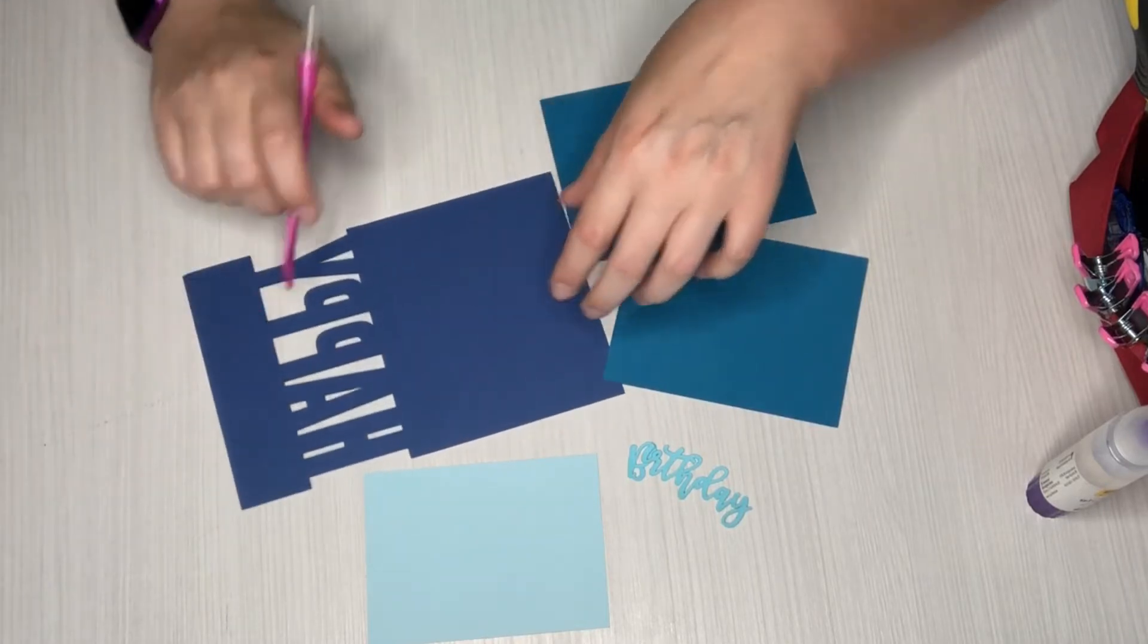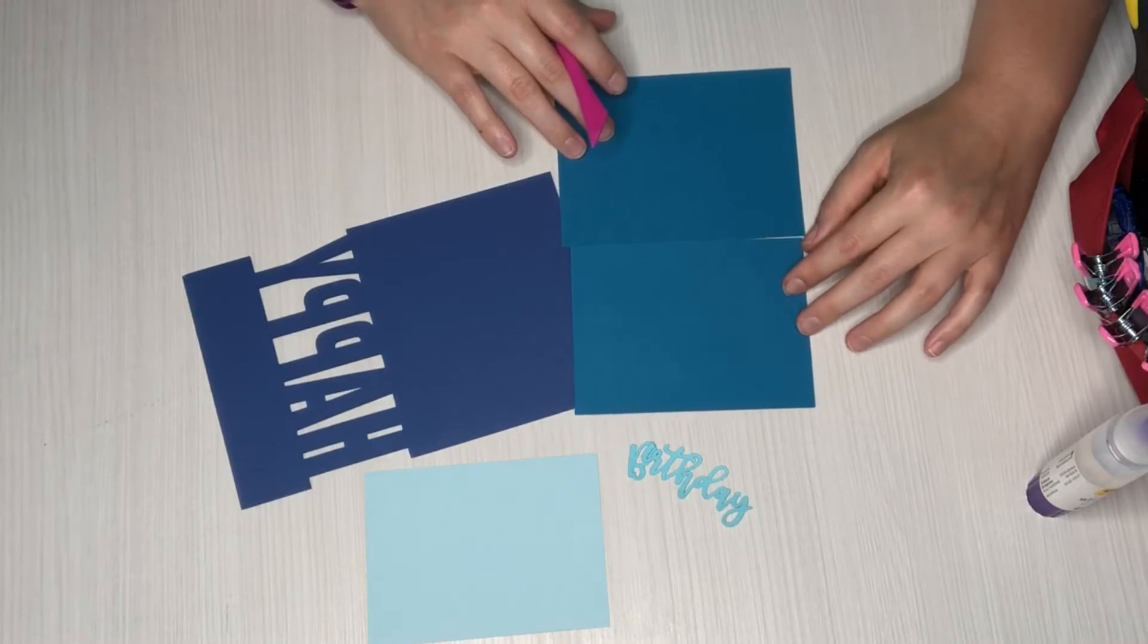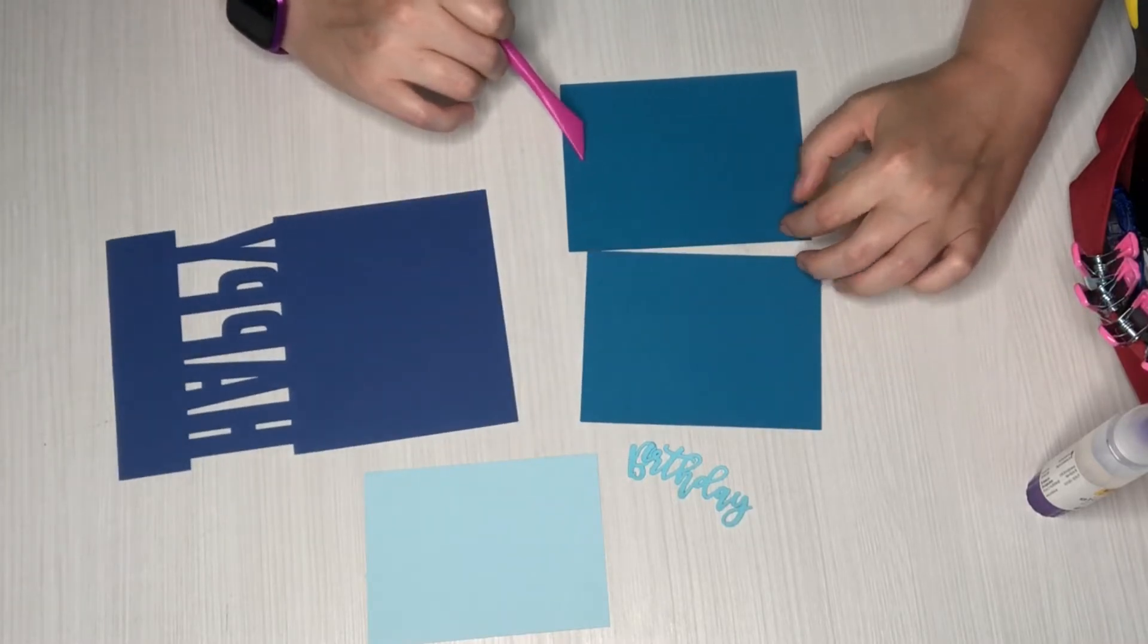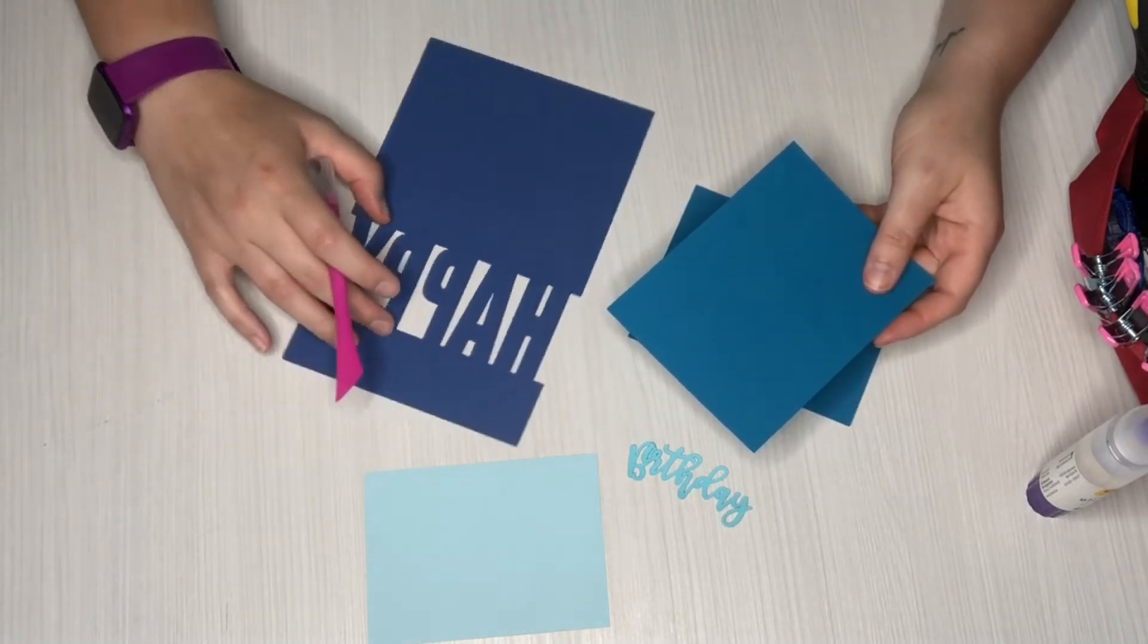And then we can open up our card, and your two rectangles that are the same color, you've got one that is smaller and then you've got your larger one. The larger one is what's gonna go behind the word happy.